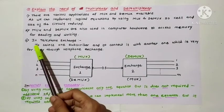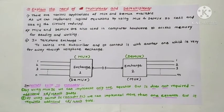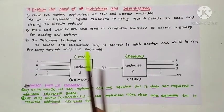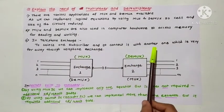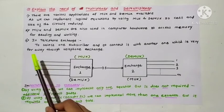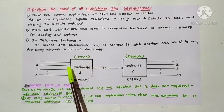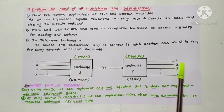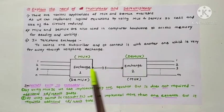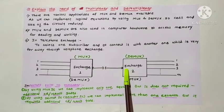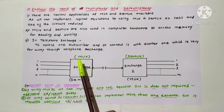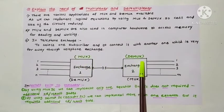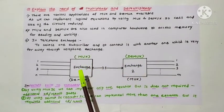Third is the telephone exchange — this is the most important application. In a telephone exchange, to select one subscriber and connect it with another one which is very far away, through the telephone exchange, it is possible only due to multiplexer and demultiplexer. Let us see how it is possible.